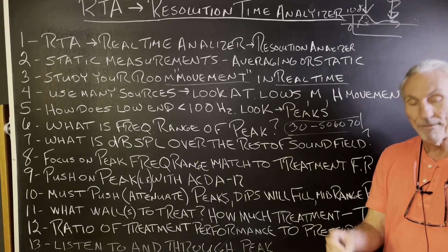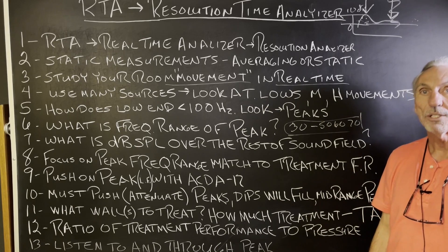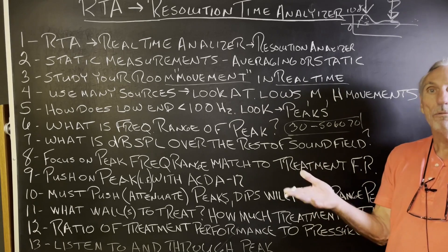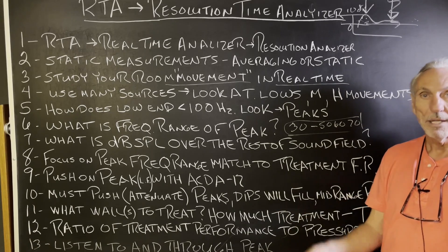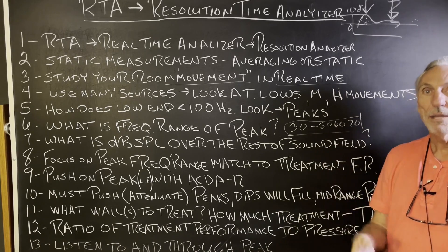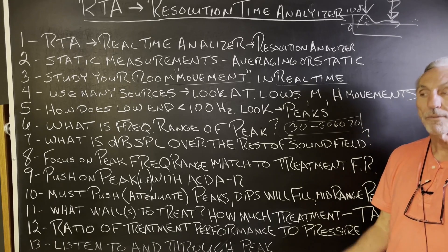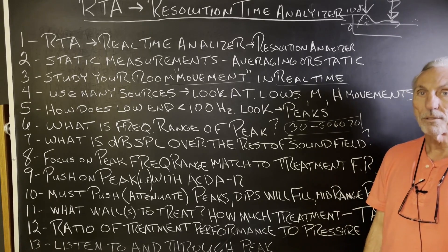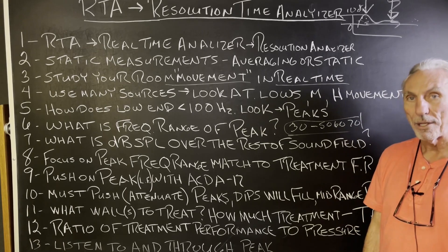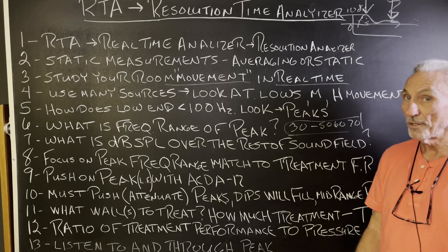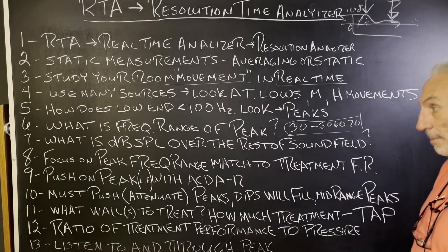Study how your room moves. When you're listening to music, have the RTA on your chair. Watch how energy moves in the room. You know what low-frequency instruments are — bass, kick drum, bass guitar. Watch how they move. Look at each octave band. You can even increase the resolution if you want to. Start out with sixths — that's a good start. You can bump up as you get more experience. Then there's FFT — we'll talk about that in another video, for those who are really experienced.